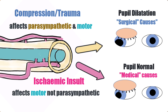When it comes to cranial nerve 3 lesions, everyone will have ptosis and eye movement abnormalities, and some people will also have pupil dilatation due to loss of parasympathetic innervation to the pupil. Those with pupil dilatation may have a surgical cause — something pressing on or damaging the nerve from the outside in. An ischemic insult to the nerve, on the other hand, would most likely result in pupillary sparing.